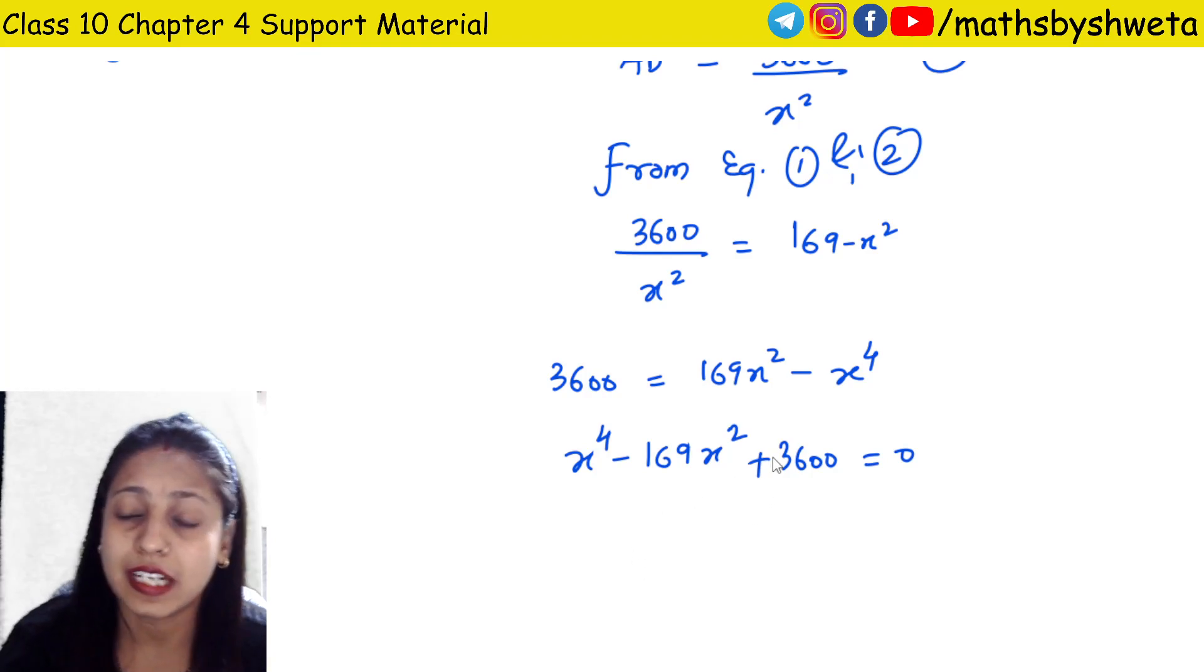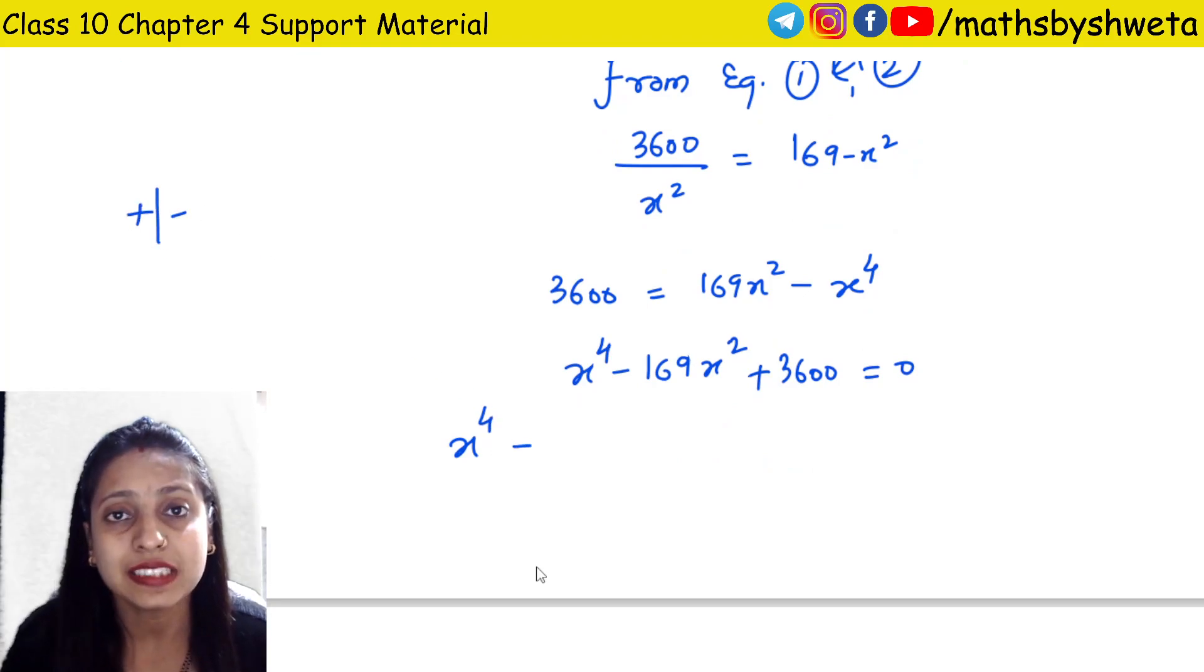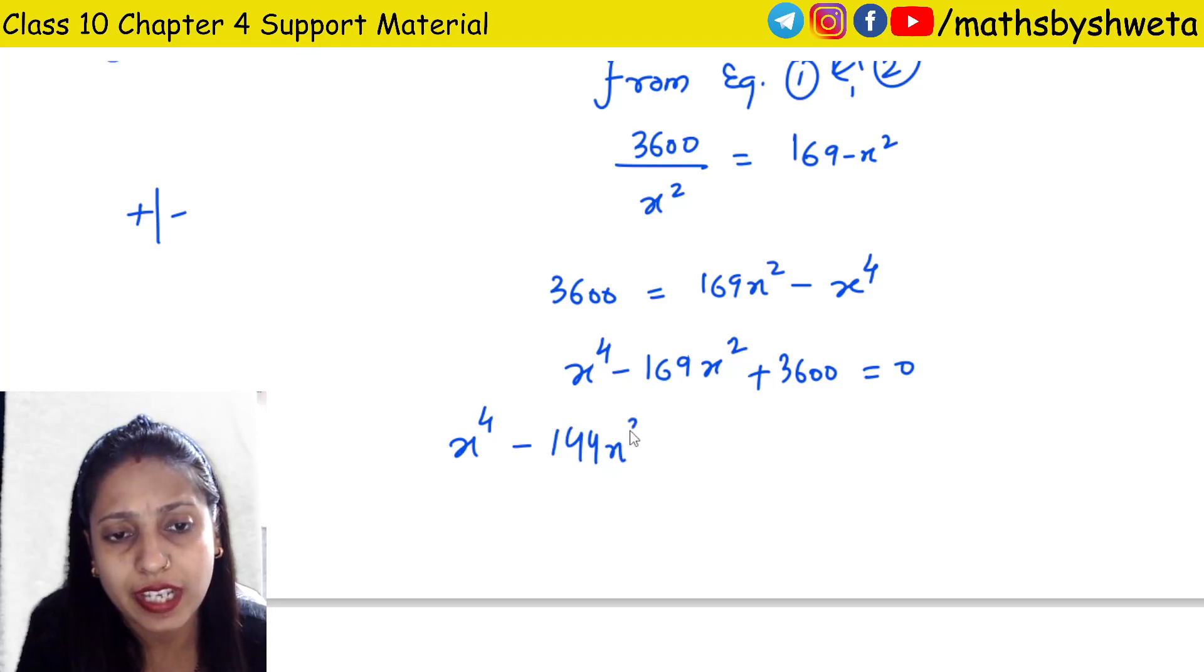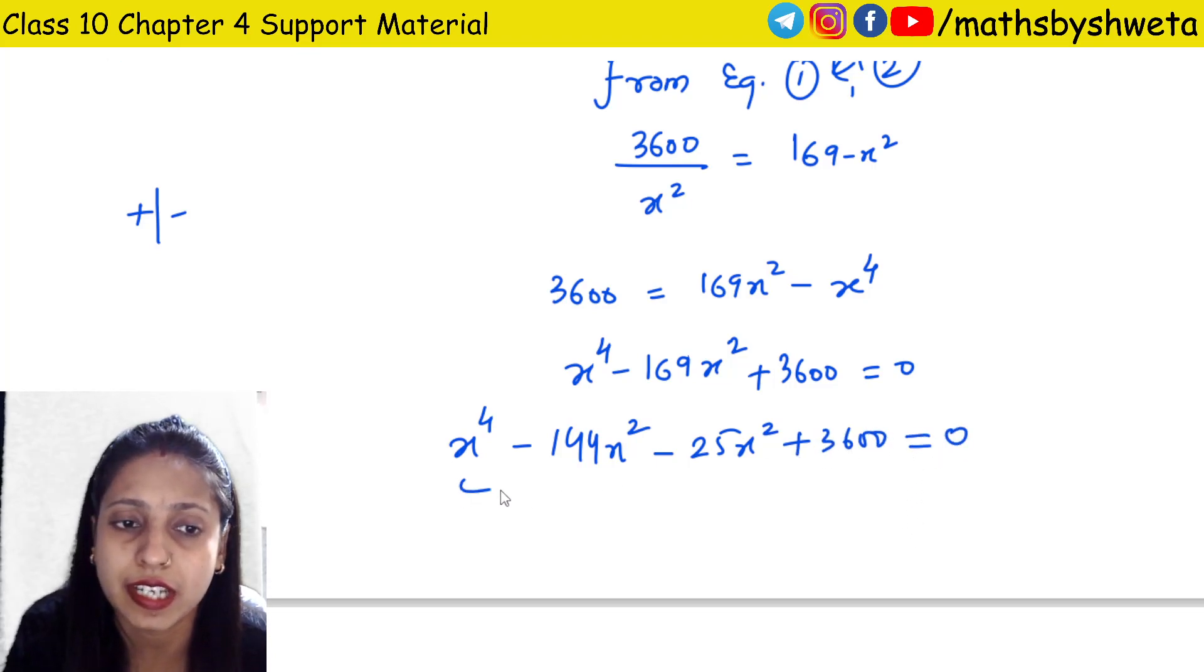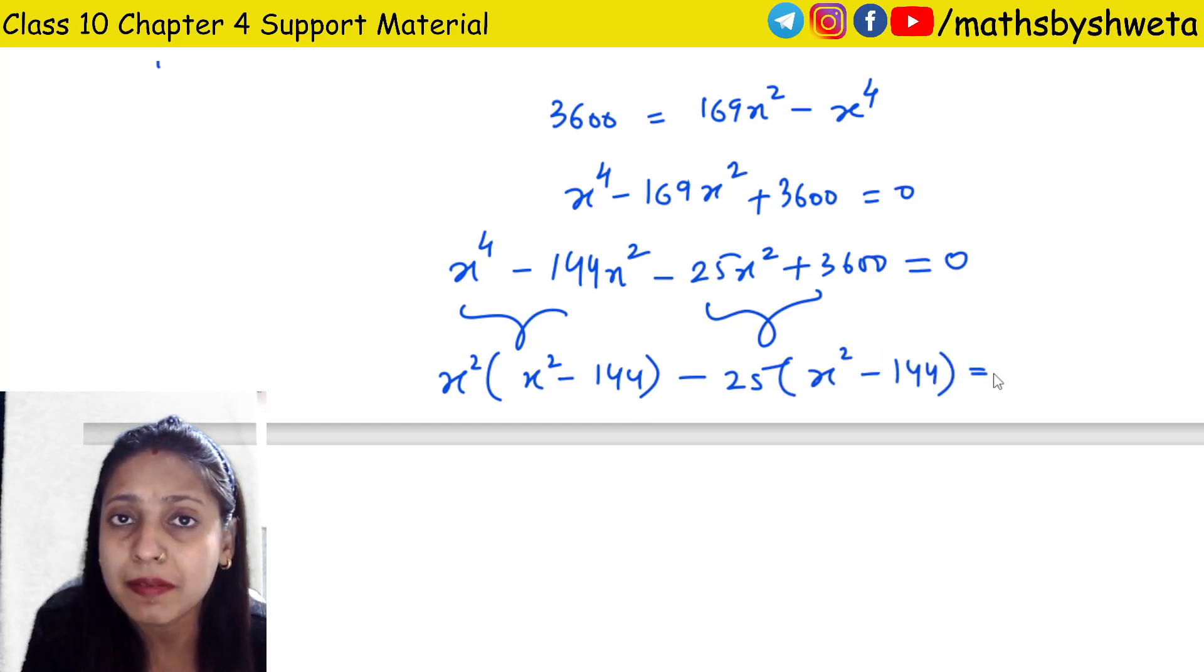Making middle term split: x to the fourth minus 169x square plus 3600 equals 0. Since 144 times 25 equals 3600, we get (x square minus 144)(x square minus 25) equals 0.